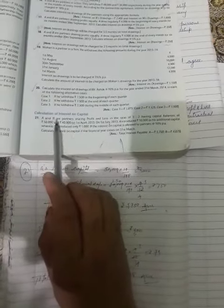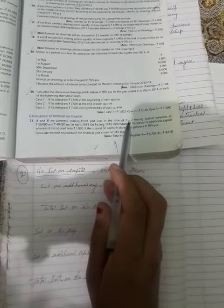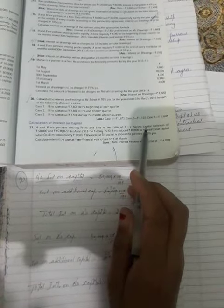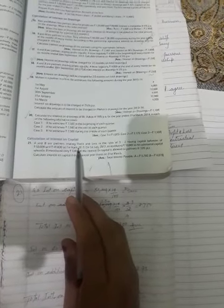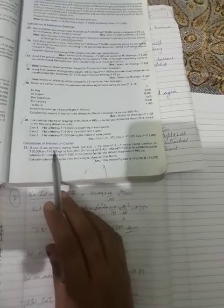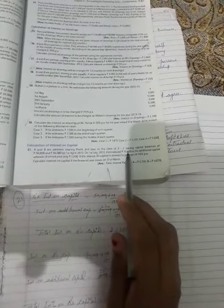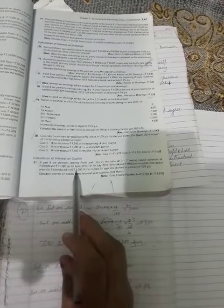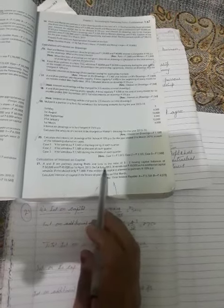The statement is: A and B are partners sharing profit and loss in the ratio 3 to 2, having capital balances of Rs. 50,000 and Rs. 40,000 on 1st April 2013. A introduced 10,000 additional capital and B introduced only 1,000 as additional capital on 1st July.